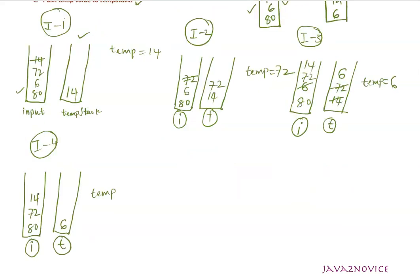In iteration 4, we pop out an element and assign it to the temporary variable. We compare the top of the temporary stack with the temporary variable — it is less than 14. So we push the temporary variable to the temporary stack and go to iteration 5.